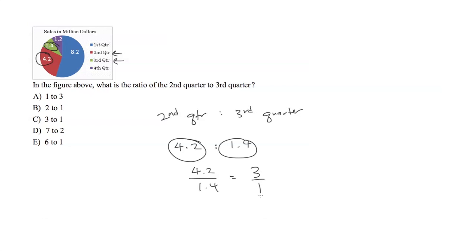And we get this is equal to 3, or basically 3 over 1. So if we convert this back to a ratio, we can say the second quarter to the third quarter ratio is 3 to 1, or answer C.